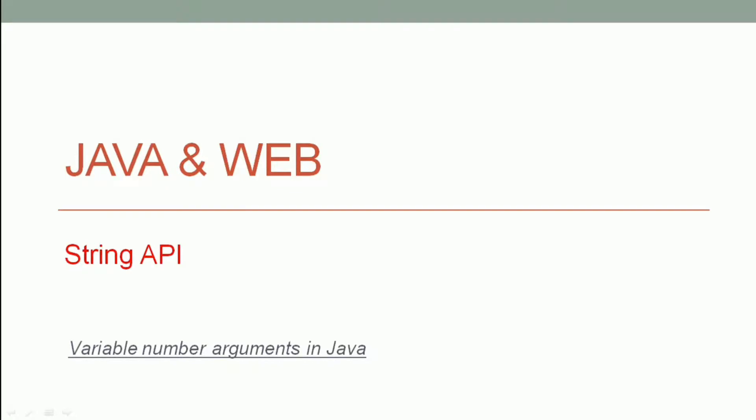Sometimes we don't know about the actual number of arguments that can be used by a method in advance. In that case, we use a variable number of arguments. I am Gyan and you are watching session 18 of Java, String API in Java.